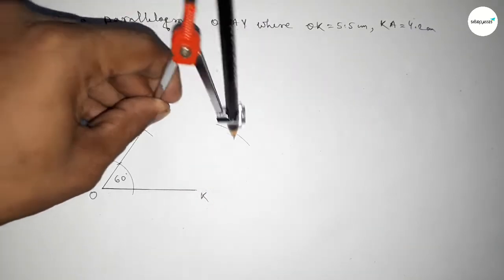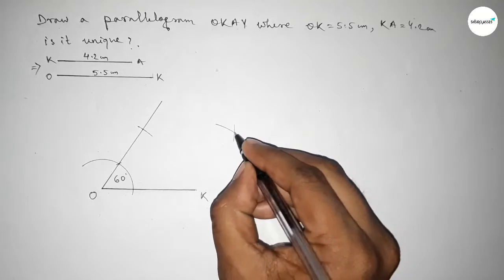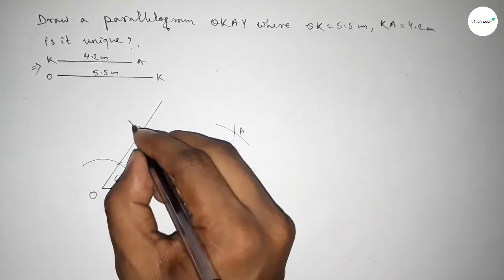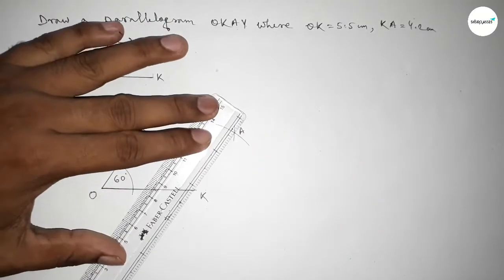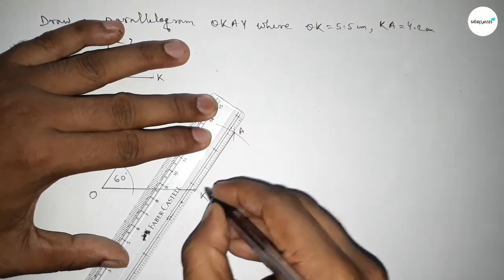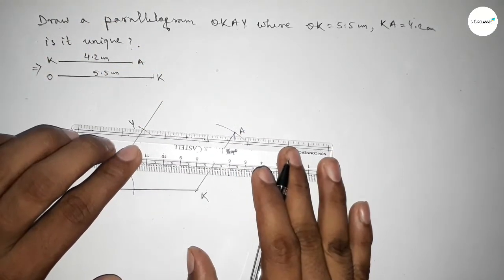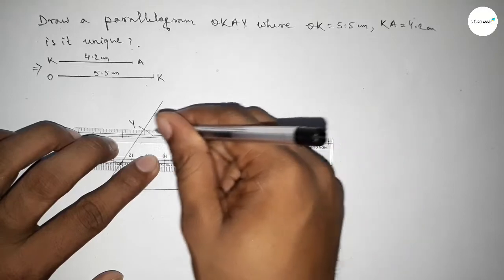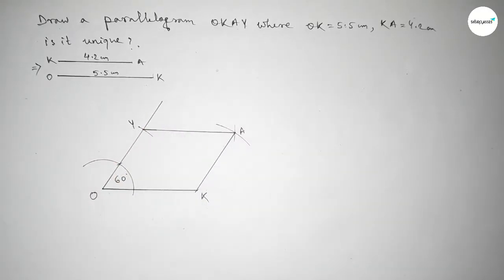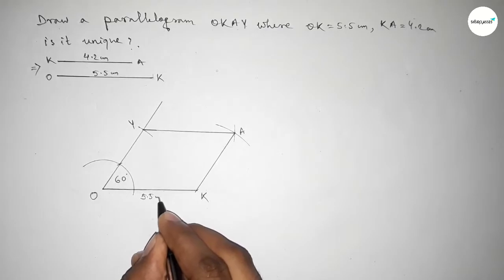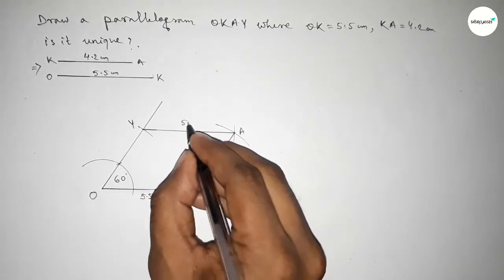So both curves intersect at a point here A and here Y. Now joining KA, then joining AY. So we got the parallelogram. This side is 5.5 centimeters, this side is 5.5 centimeters.